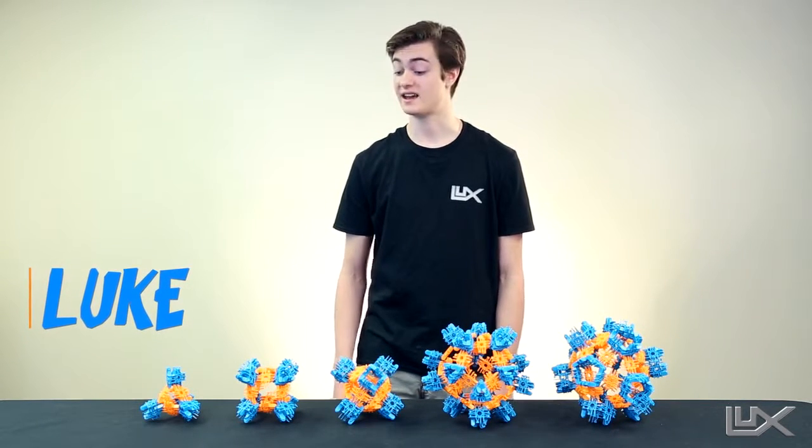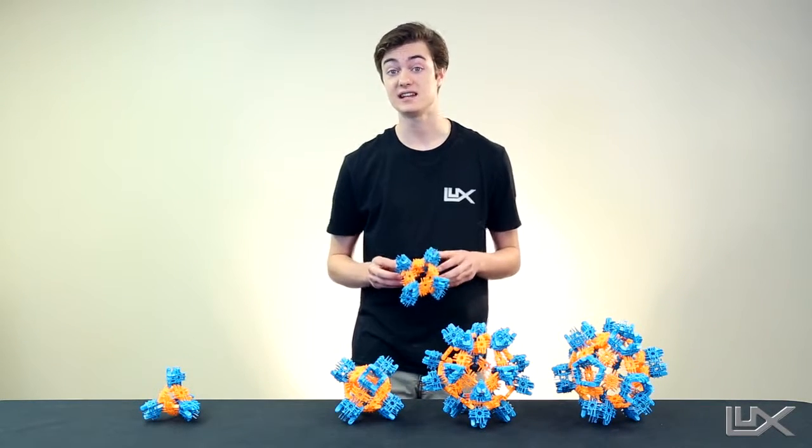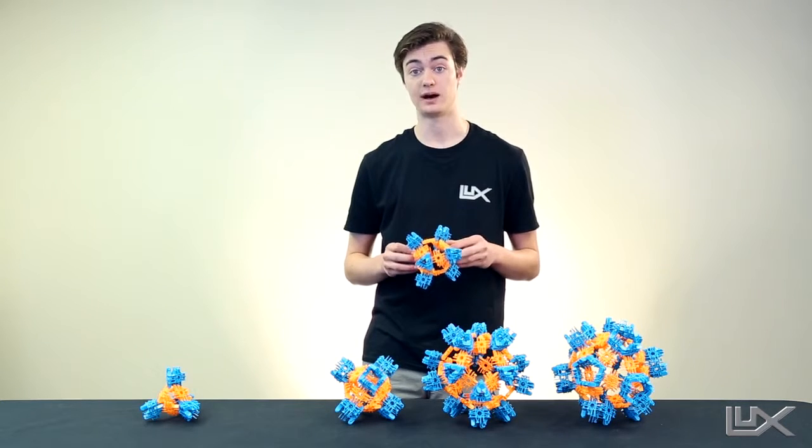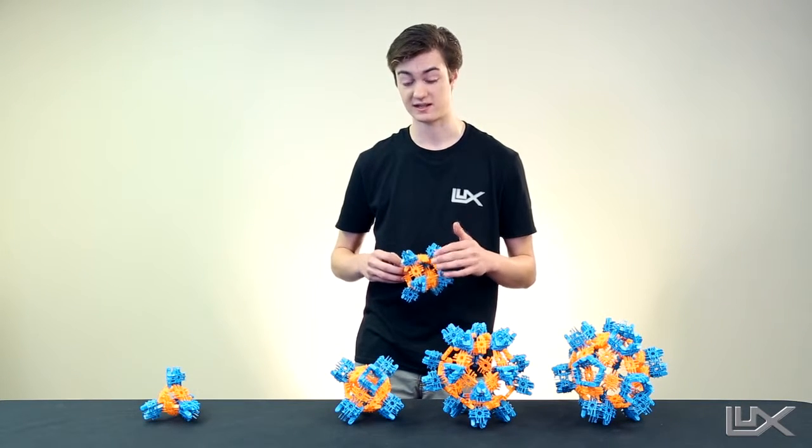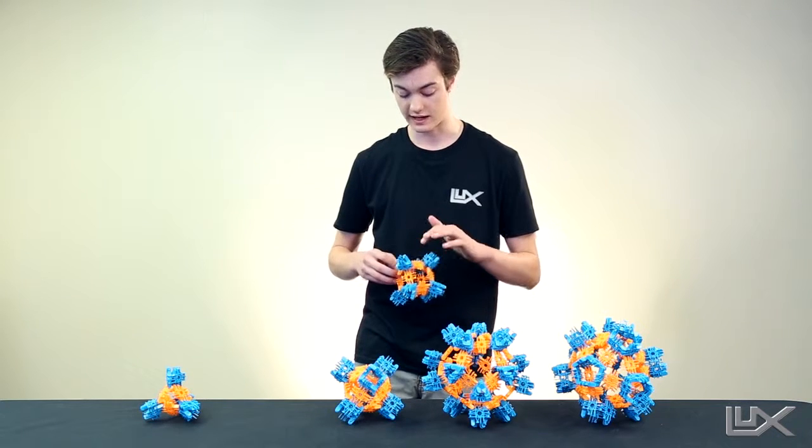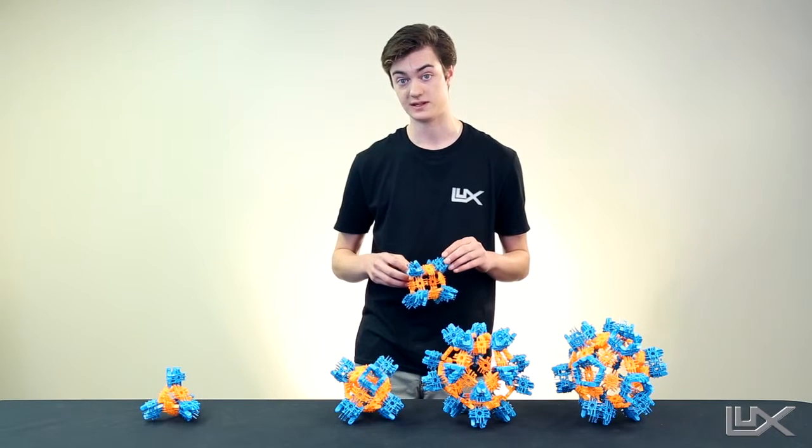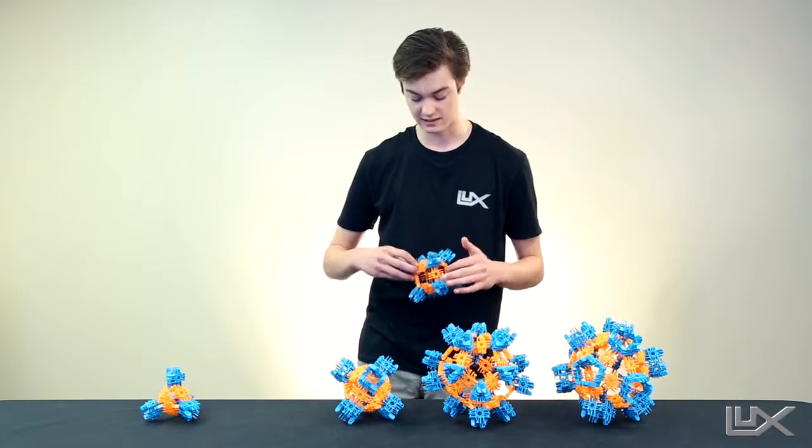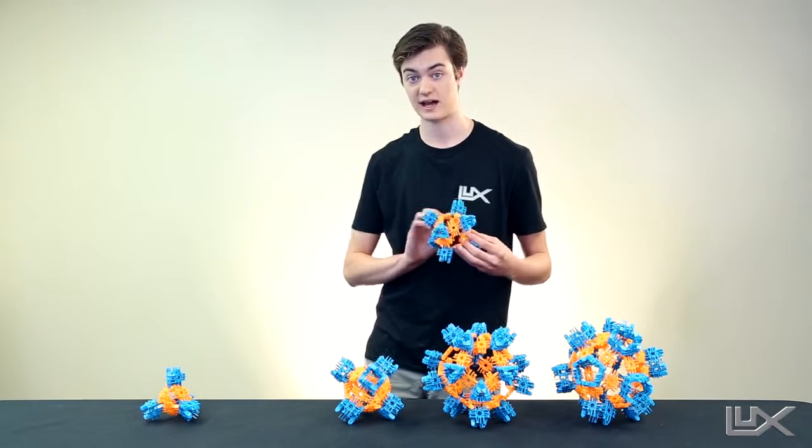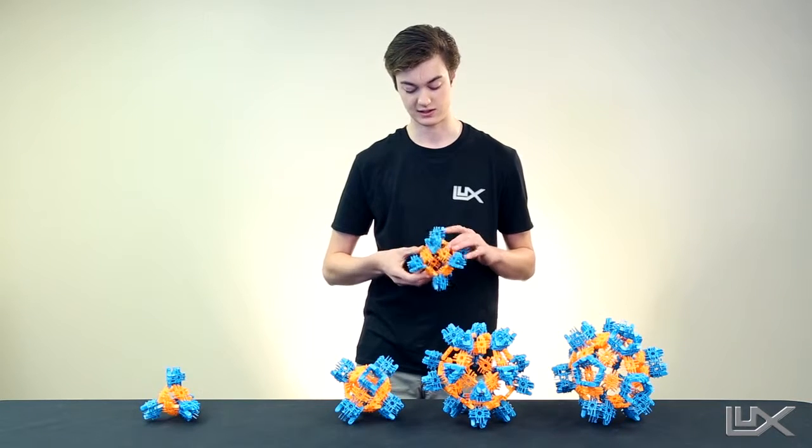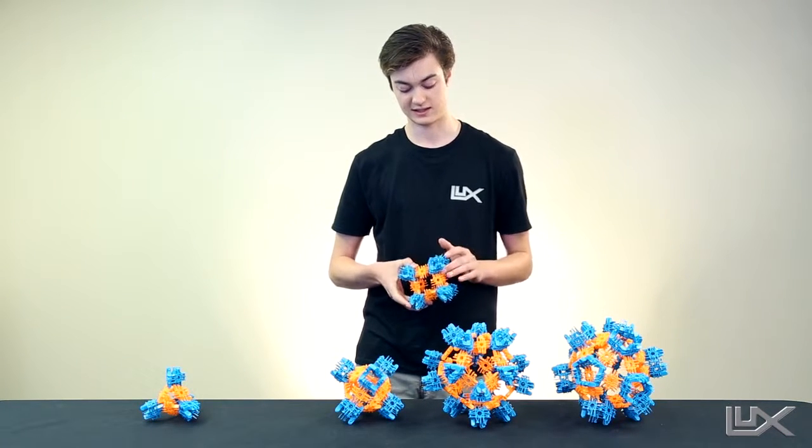Hey everybody, this is Luke from LUX and now we're going to build the hexahedron, which is a six-sided polyhedra. The sides we count are not the orange or blue pieces, but rather the spaces in the middle. Each space comprises one side of this polyhedra, and as you can see, there are six sides.